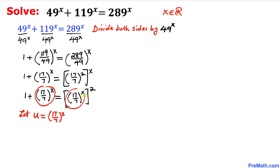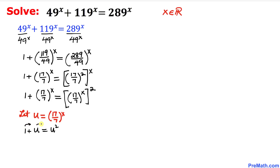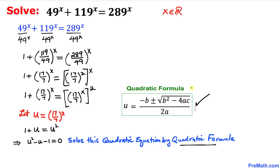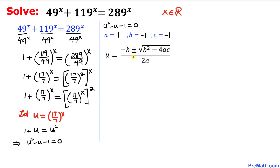After substitution, our equation becomes 1 + u = u². Moving everything to the right-hand side gives u² minus u minus 1 equals 0. This is a quadratic equation, and we are going to solve it using the quadratic formula.